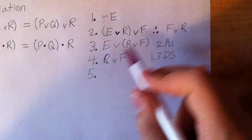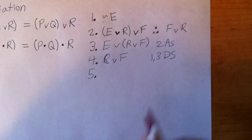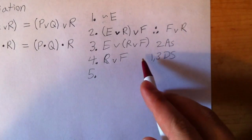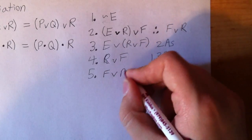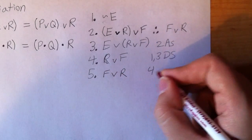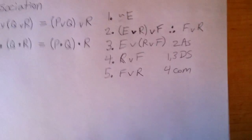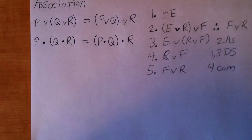Remember, it's got to look exactly like the conclusion. So what rule allows me to switch the order of these two? It's the one we just did. Commutation. F, R. Line 4, Comm. Association's pretty straightforward. It doesn't come up too often. But again, just like with all the equivalency rules, it's something that when it does come up, it's really, really useful now.